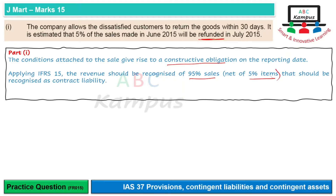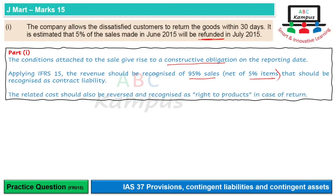This is the amount that we have to pay. Aur isme related cost jo hai wo reverse honi chahiye — kyunki jitni amounts ka aap revenue recognize nahi kar rahe, utni phir aapko cost bhi, using the matching concept, record nahi karni chahiye. Aur usko recognize kiya ja sakta hai as 'right to return product' — koi bhi aap uska naam rakh sakte hain — agar in case of return jo aapke paas goods aayengi unke liye.